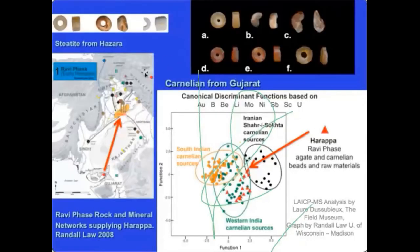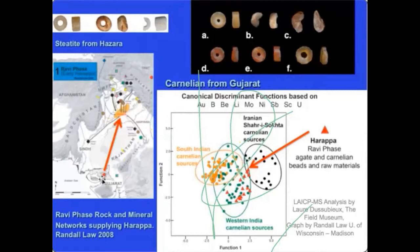Studies by Randall Law determined that steatite from Harappa during the early phase comes from northern Pakistan in the region of Hazara. Recent analysis of carnelian from the Ravi phase at Harappa indicates that all of the carnelian comes from a source in Gujarat. This means that people from the Ravi phase were getting their carnelian from that region, manufacturing beads at Harappa, and developing trade networks to bring raw materials.